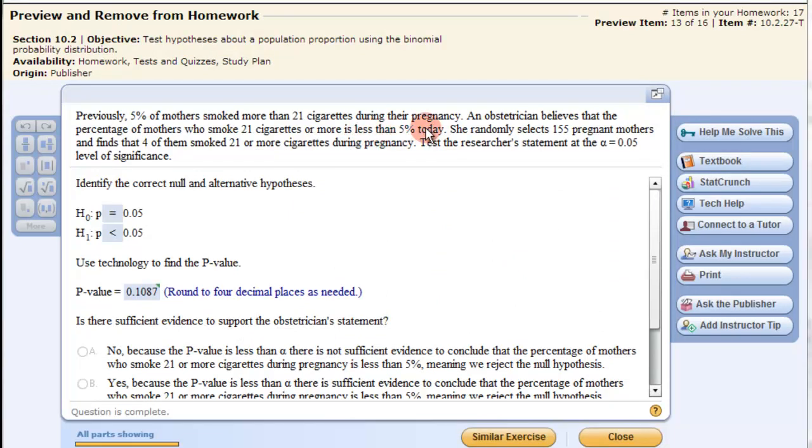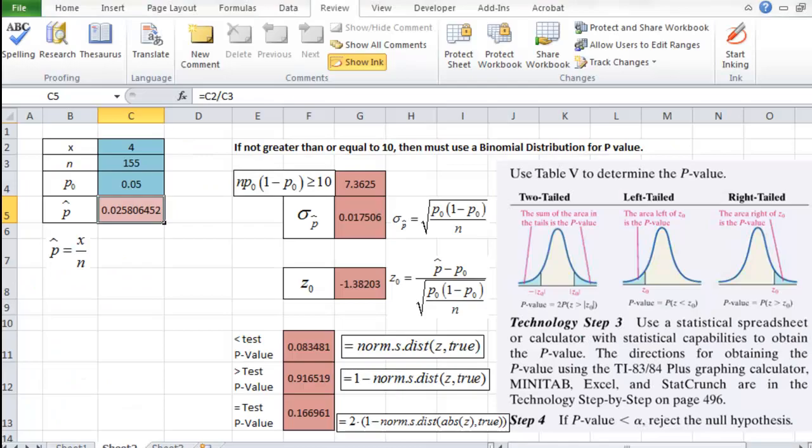So we look over here at our equation or inequality here and it says 7.36. It's not greater than or equal to 10. We cannot use the normal distribution approximation here. We need to go and make a binomial distribution.